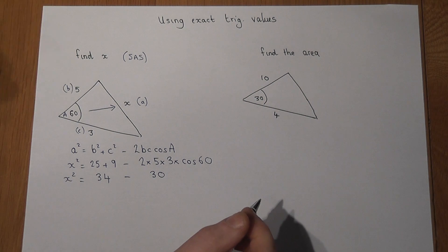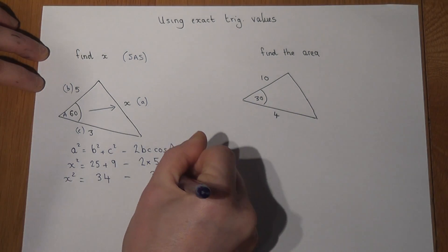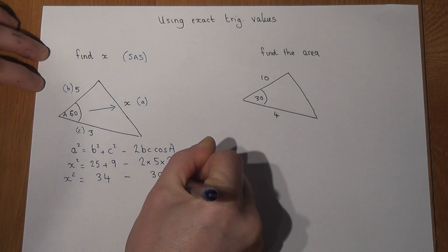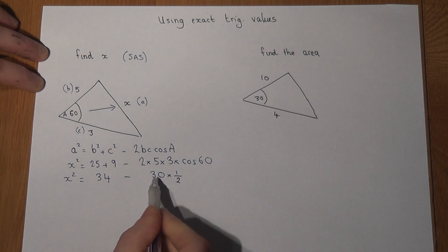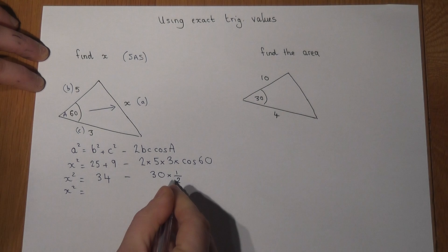Now if you put this into your calculator, we get a key value which you need to know for your examinations, and cos 60 is the same as a half. So this becomes 30 lots of a half, which is just 15.